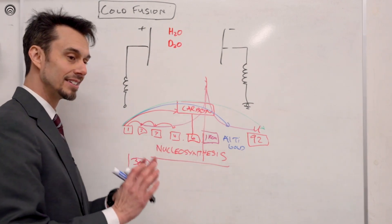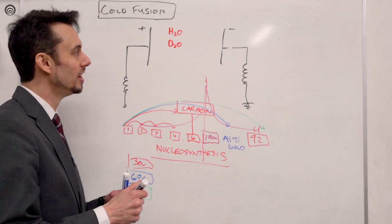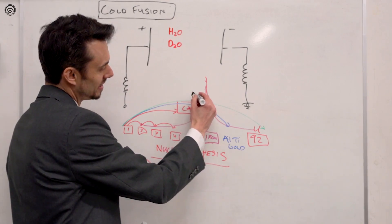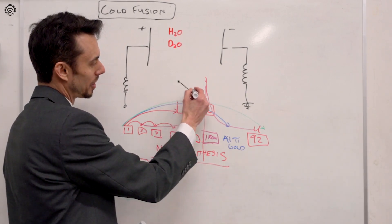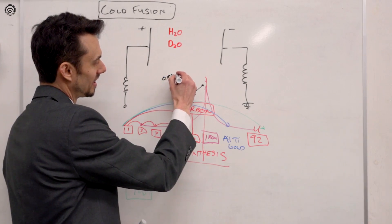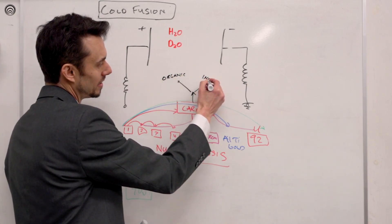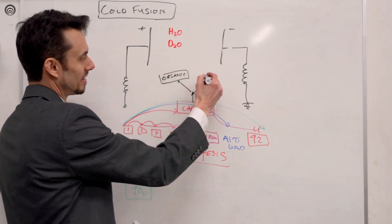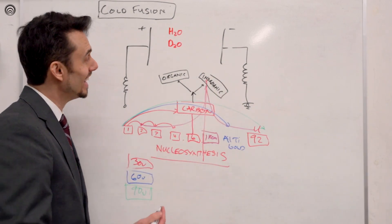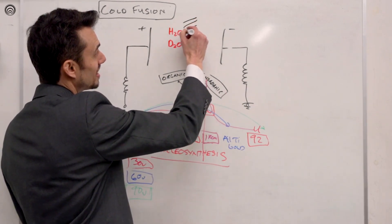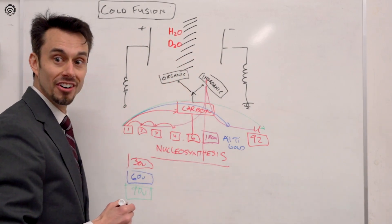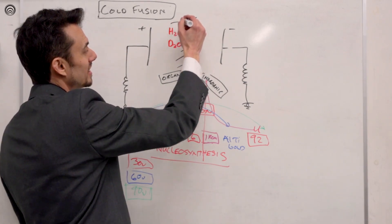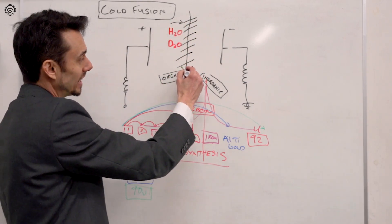At 30 volts we get to carbon and it stops — as far as it wants to go. There are actually two types of carbon: organic and inorganic. What we figured out is that the neutron flux in the middle of the electrodes actually makes and synthesizes organic carbon.